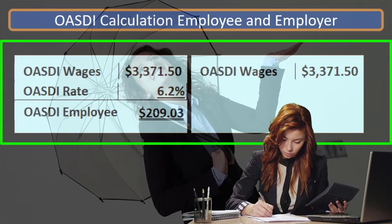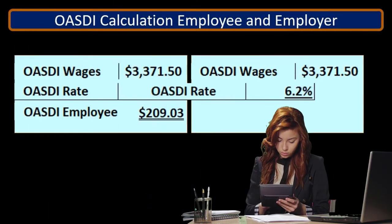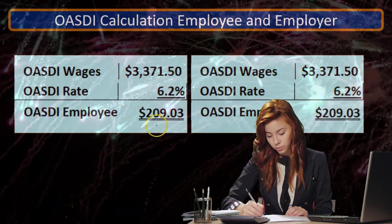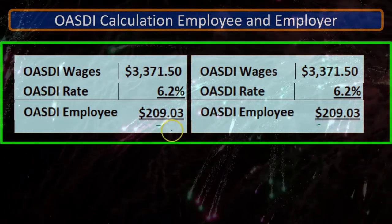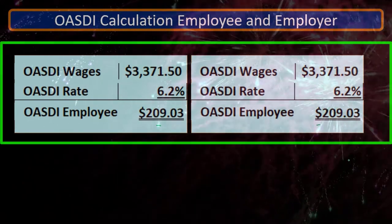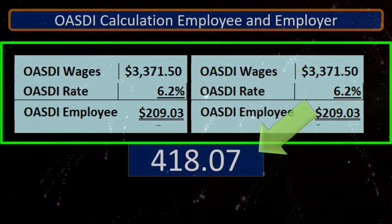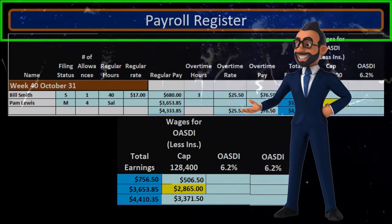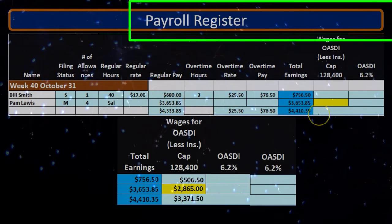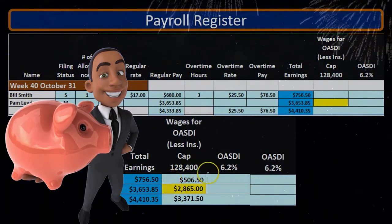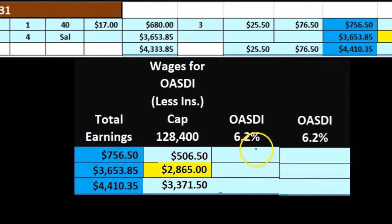If we do that again for the employer portion — same calculation — $3,371.50 times 6.2% gives us $209.03. Note that we're doing this calculation twice: once for the employee, coming out of the employee's paycheck, and once for the employer, coming out of the employer's checkbook. Adding those up, the total is $418.07 between the employer and employee. When we consider the payroll register, we're going to concentrate on the employee tax to get to the net check. We'll take each individual employee's wages and calculate Social Security tax for each one.